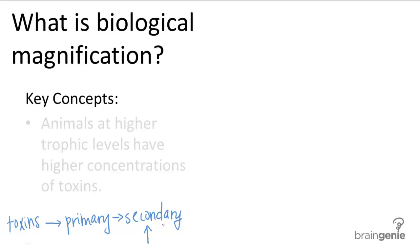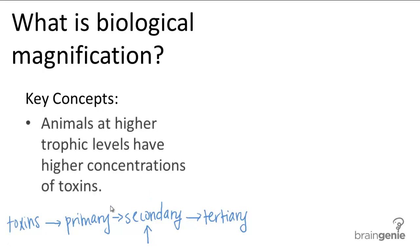Now along comes a tertiary consumer, who eats the secondary consumer. So see what's going on here? As you move higher in the trophic levels, the toxins will build up to higher concentrations. A tertiary consumer has higher concentrations of toxins than the secondary consumer, who had higher concentrations than the primary consumer. This building up of toxins at higher trophic levels is called biological magnification.